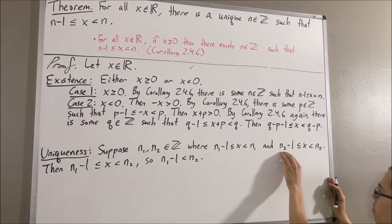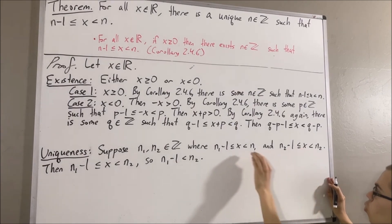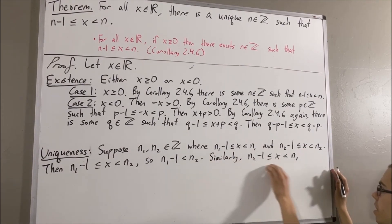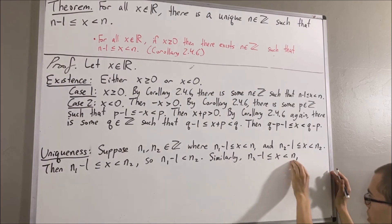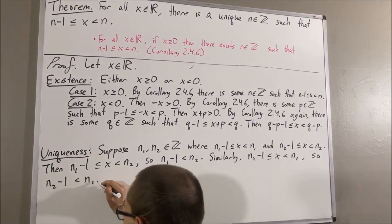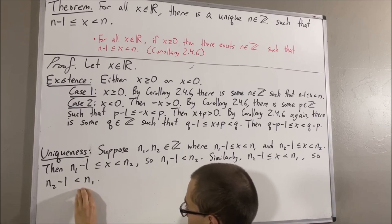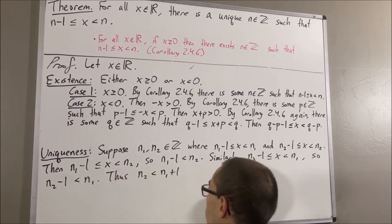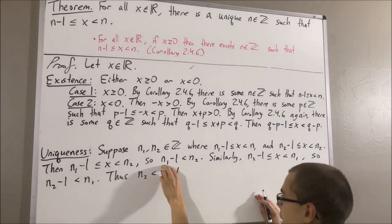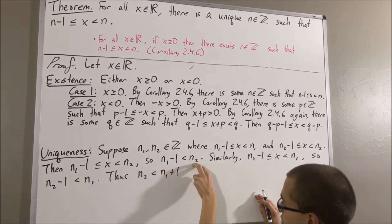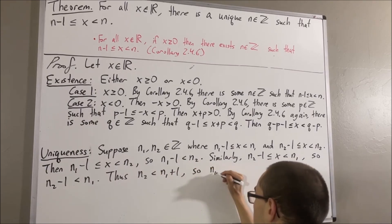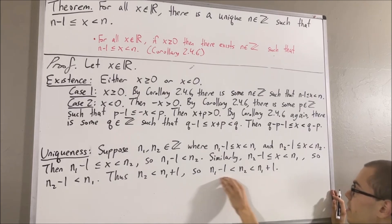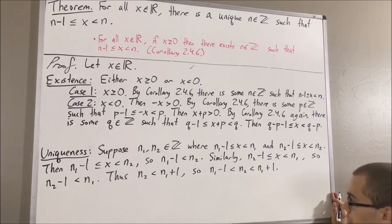Similarly, we see that n2 minus 1 is less than or equal to x, which is less than n1, and this tells us that n2 minus 1 must be strictly less than n1. If we take this inequality and add 1 on both sides, we get that n2 is less than n1 plus 1. Putting this together, we see that n1 minus 1 is less than n2, which is less than n1 plus 1. Because we're dealing with integers, this tells us that n1 must be equal to n2.